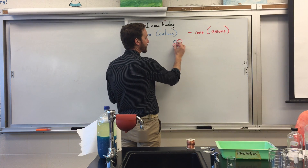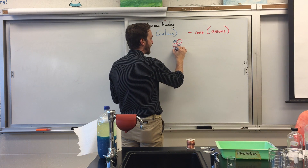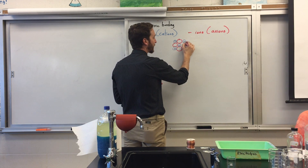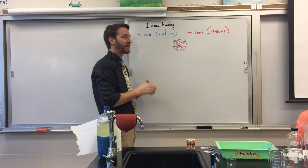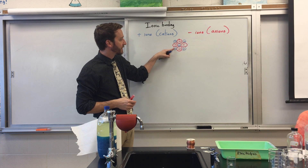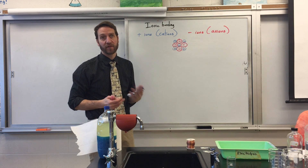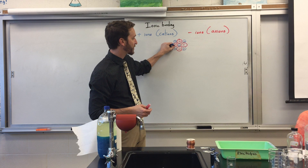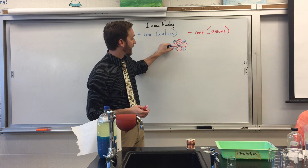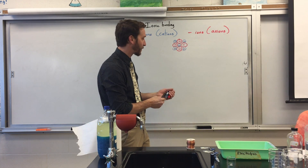In reality, ionic compounds are made of huge collections of positively charged cations and negatively charged anions, all arranged in what we call a crystal lattice. It's basically a large clump of positive and negative ions, where the positive ions always line up with the negative ions. Like charges repel, so we keep like charges as far apart as possible and oppositely charged particles close together. This is an example of what we call a crystal lattice.